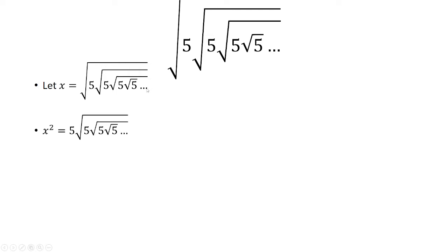Let's square both sides and divide by 5. We still get the same pattern here, which is what we started with. This is the same thing we said was x, so we can focus on x squared over 5 equals x.